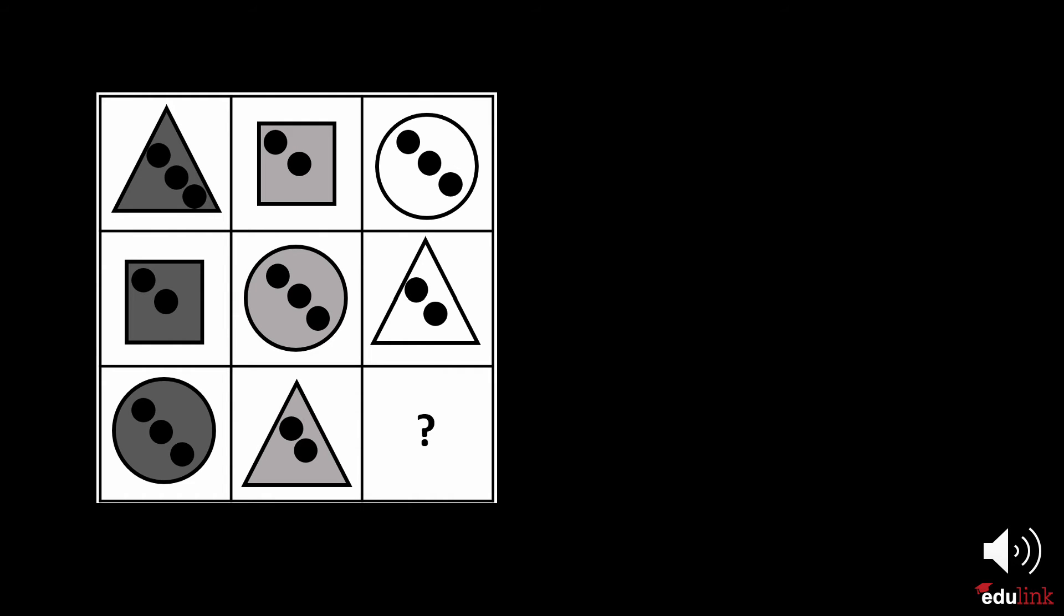The shading is always the same within each column, but always different within each row. If you look at the dots, you will see that they follow a 3-2-3 pattern in the first row, and a 2-3-2 pattern in the second row. The last row follows the same pattern as the first.